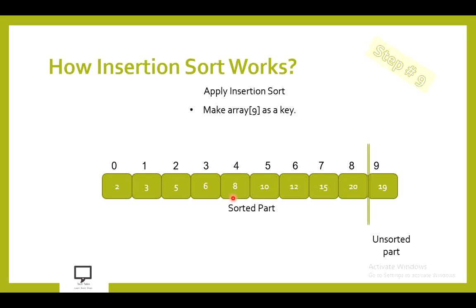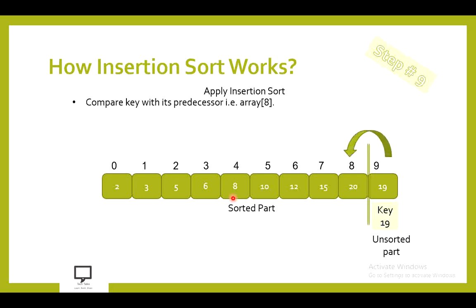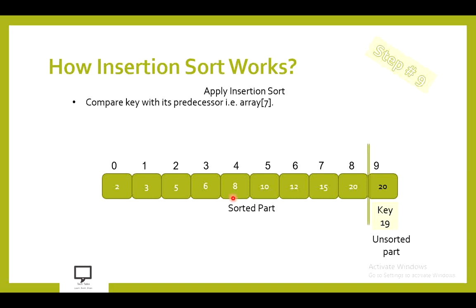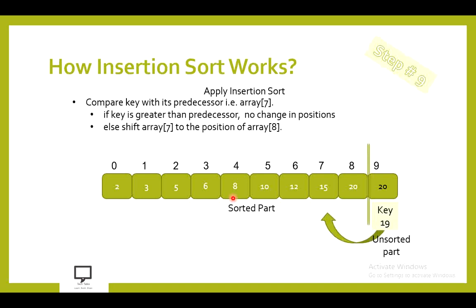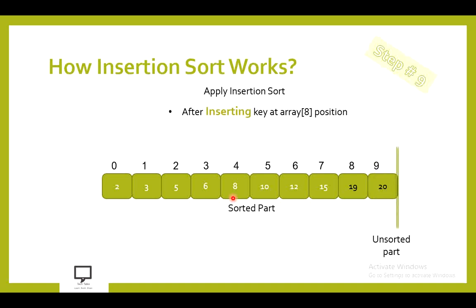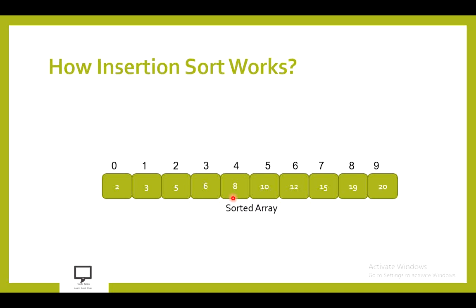In the last step, step 9, we make array[9] the key value. We compare it with its predecessor. Condition is false, so shift array[8] to array[9]. We compare key 19 with array[7], which is 15. 19 is greater than 15 — condition is true, so no further shifting. We insert 19 at array[8] position. After insertion, the whole array is now sorted. This completes the sorting performed with insertion sort.